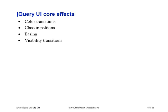jQuery core effects include class transitions, color transitions, easing, and visibility. You can refer to the easing examples covered in the lecture for this week. This is what I was mentioning about transitional effects normally associated with PowerPoint slides. Some of these effects are shake, size, slide, transfer, pulsate, fade, fold, highlight, and bounce. These are elements that are also possible in PowerPoint, so the jQuery effects are not all that different from what we've probably done in the past in PowerPoint.